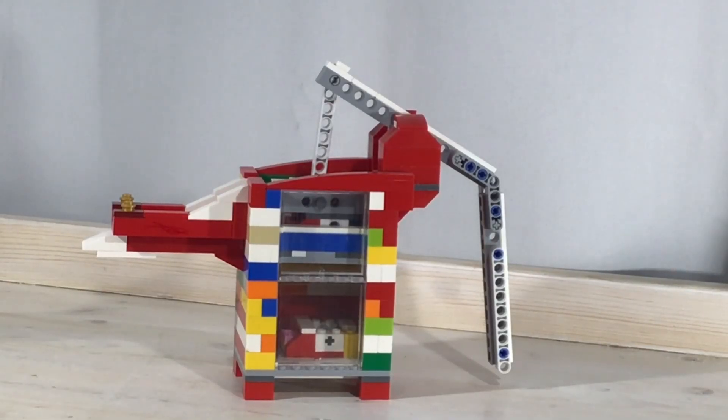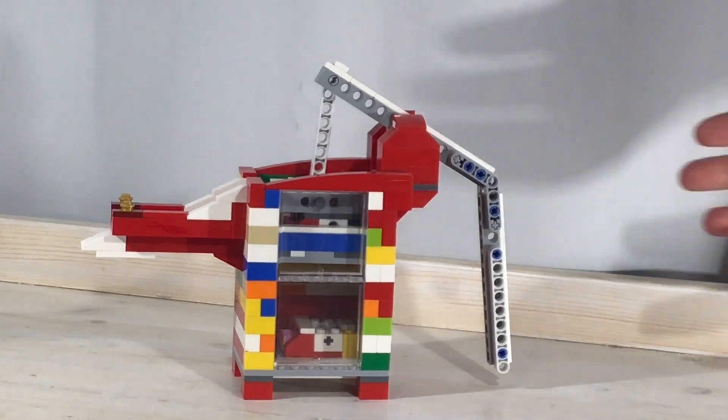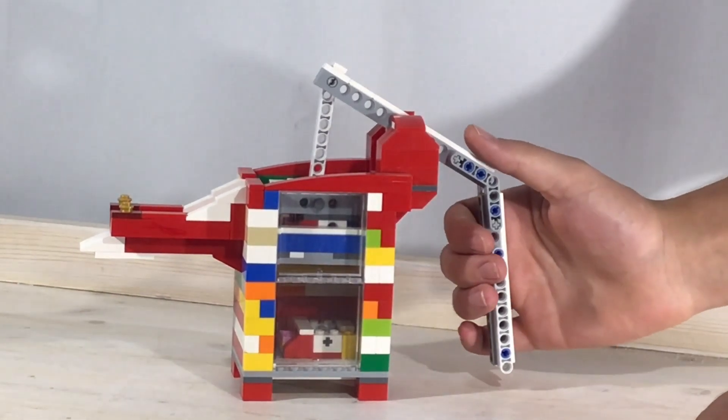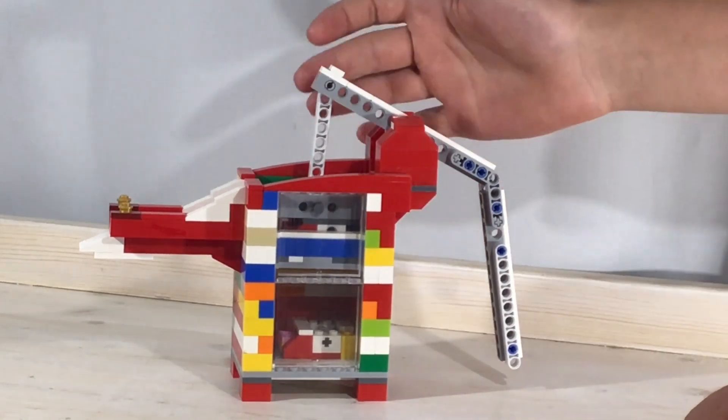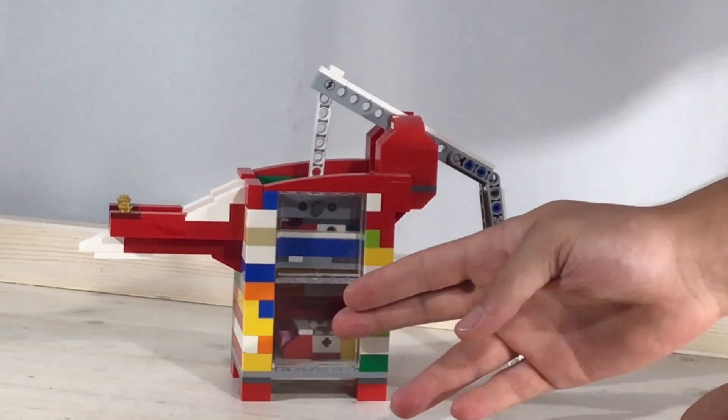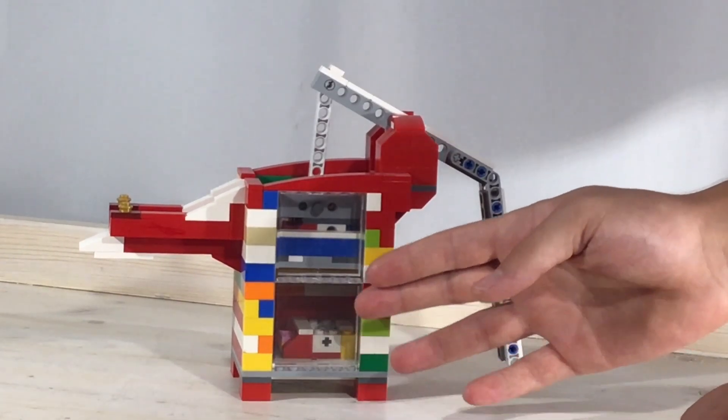Now in case you haven't seen my first video explaining how this pump works, let me give you a brief rundown. Right here is a handle. When you raise the handle through a series of linkage arms it lowers the center section. There is water in here from the beginning first pump.